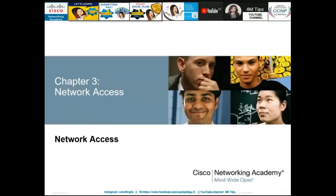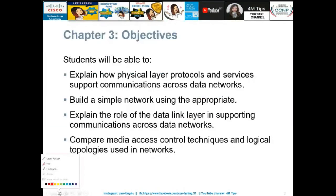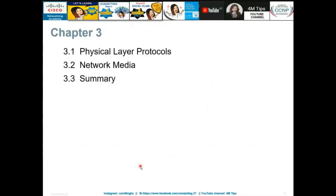Now we go to Chapter 3, which is Network Access. Network Access involves the physical and data link layers in the OSI model. The objectives are: how to explain how physical layer protocols and services support communication across data networks, how to build a simple network using appropriate devices, and how to explain the role of the data link layer.